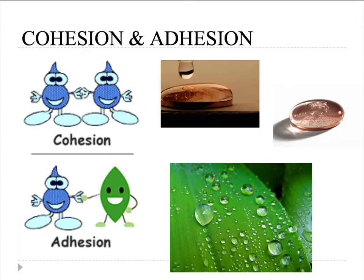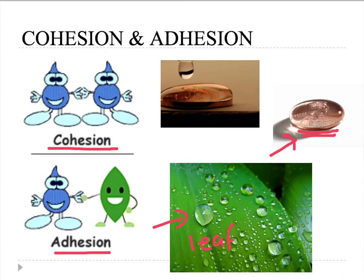Cohesion is the attraction between two water molecules — the same substance attracting each other. Adhesion is when a water molecule is attracted to another surface or substance, in this case a leaf, with water attaching to it. We also had the penny lab, where we saw that water was attracted both to the surface of the penny and to itself.